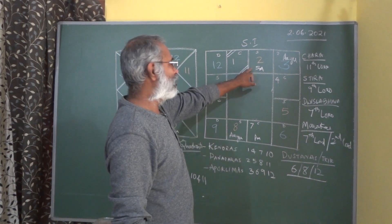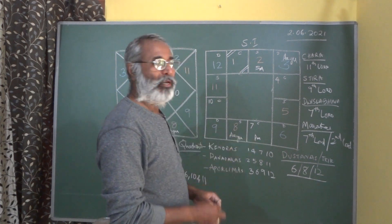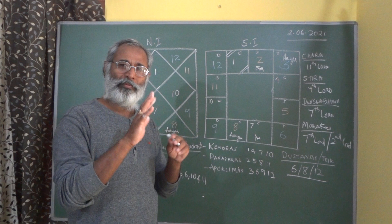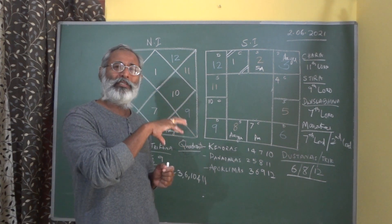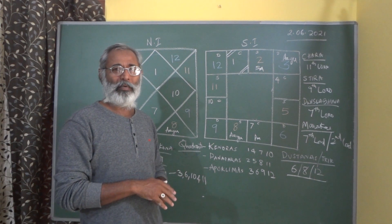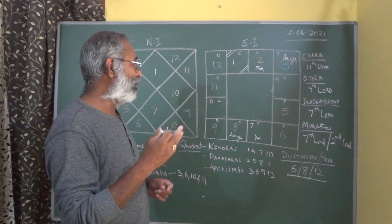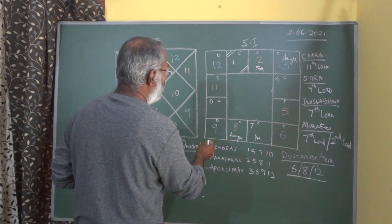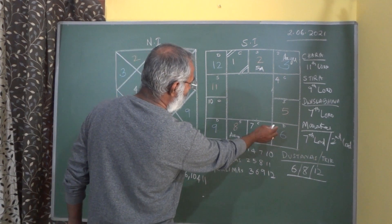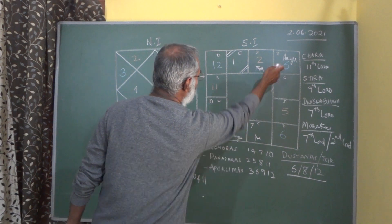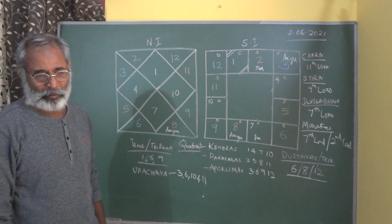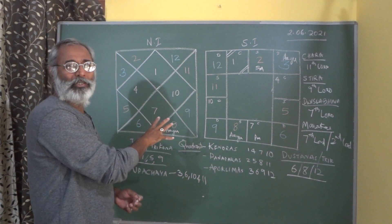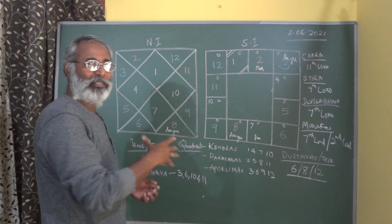Why the 2nd Lord? When we do Bhavat Bhava to understand Ayu — the next Ayusthana is the 8th from the 8th, counting 1 through 8, which is the 3rd house. The 12th from the 3rd house is the 2nd house, which becomes the primary/secondary Maraka. Both are very strong — the 7th Lord is primary and starts the process; the 2nd Lord is the one which actually kills. These are the Marakas.